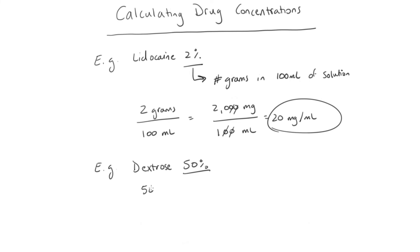Again, 50% represents the number of grams inside 100 milliliters of solution. However, 50 grams is equal to 50,000 milligrams. We put that over our 100 mils, we cancel out our zeros, and we see that we get 500 milligrams per mil.